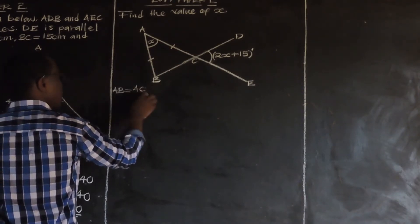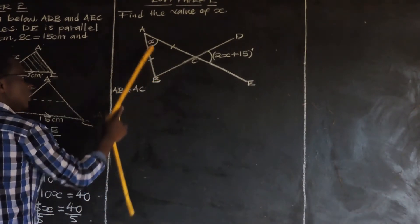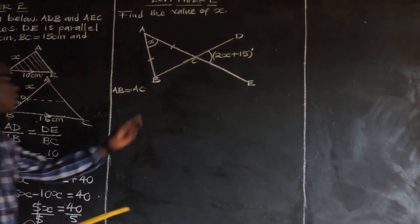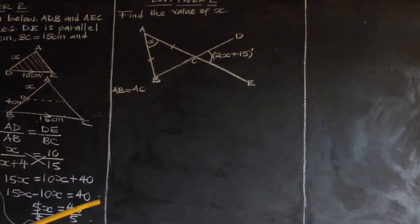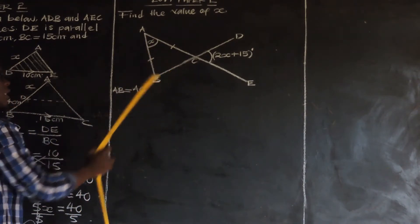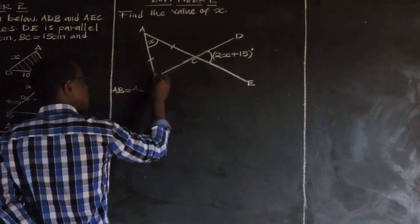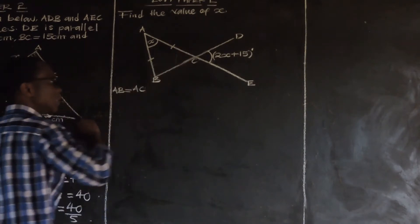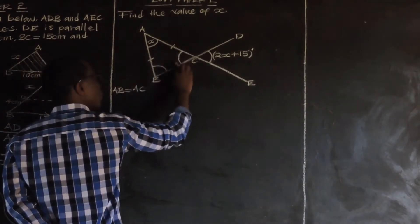AB and AC are equal. The base angles at points B and C are going to be equal as well. The base angles of an isosceles triangle are equal. So this angle, this angle, and this angle are going to be equal.